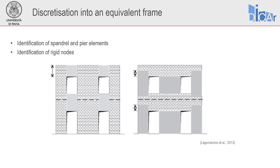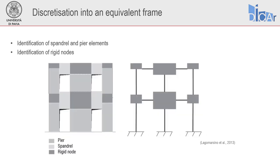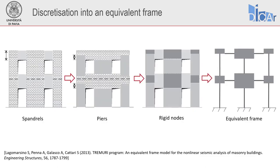In the discretization process, spandrels and piers are identified and assembled in a frame that can represent the lateral response of the real wall, with the automatic identification of the most probable failure mechanism. Rigid nodes are delimited by deformable elements — so by spandrels and piers — and they carry their own mass and are restrained to the frame nodes. This procedure — the identification of elements and the construction of the equivalent frame — is the one adopted by the software Tremuri.